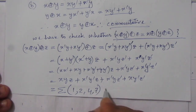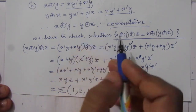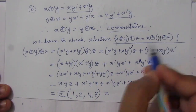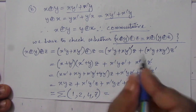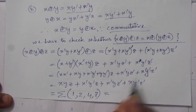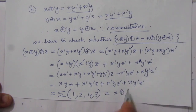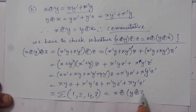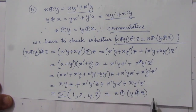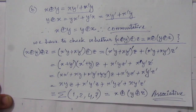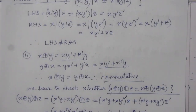Similarly, if we expand x XOR (y XOR z), we also get the same summation Σ(1, 2, 4, 7). Therefore, we can conclude that (x XOR y) XOR z equals x XOR (y XOR z), so the XOR operation is associative. This is the solution to problem number 2.25. Thank you for watching.